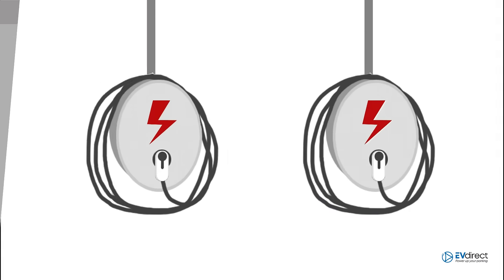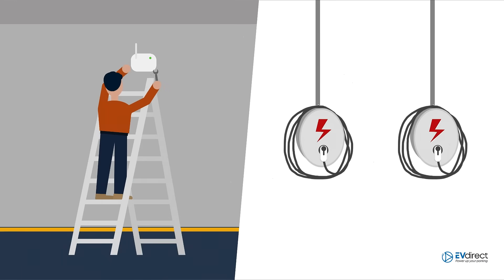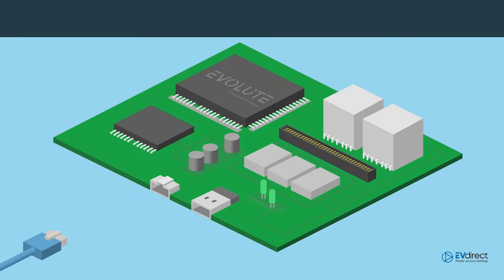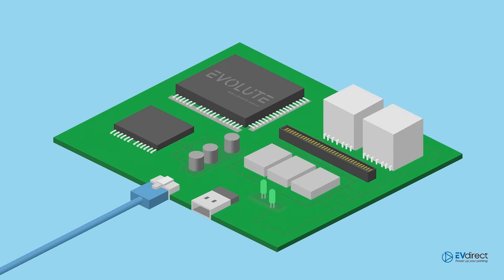Another feature that sets the Evolute apart is that it is hardwired to the internet, meaning it is not reliant on expensive Wi-Fi networks to operate. And if the internet ever goes down, the Evolute will still safely manage and operate load management through its onboard controllers.